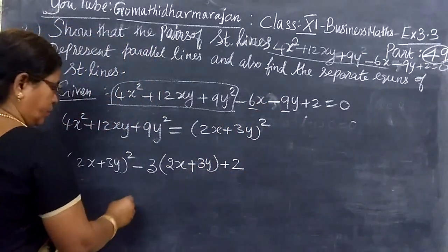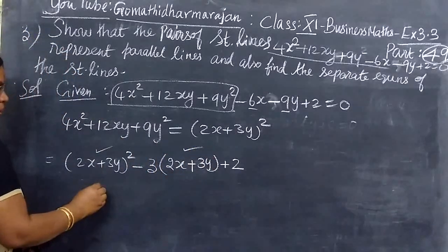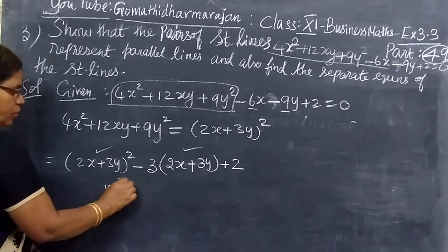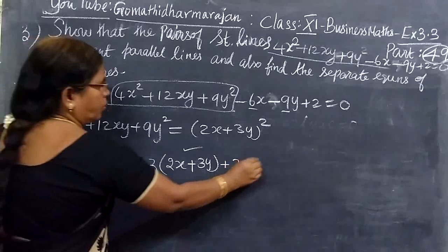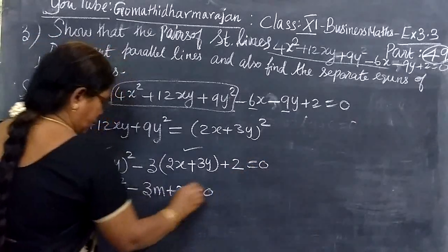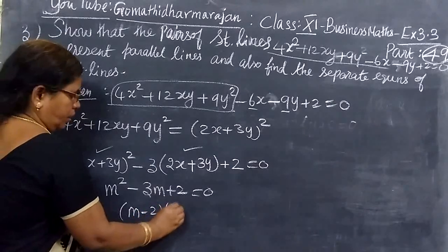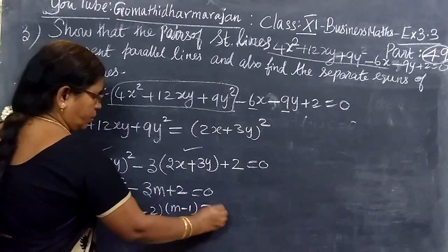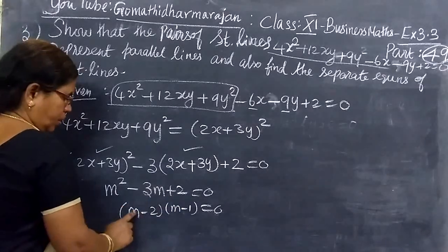Now term M will be required. So M² - 3M + 2 = 0. This is (M - 2)(M - 1) = 0. Multiplying and adding, we get M = 2 and M = 1.